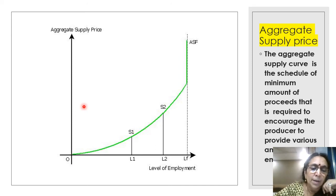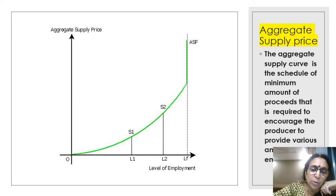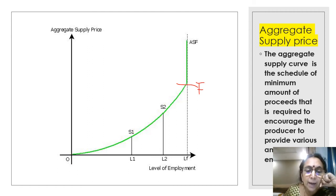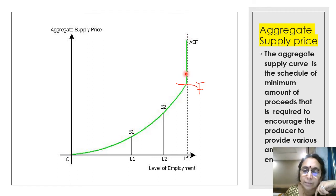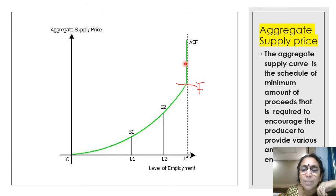Now we draw the aggregate supply curve. The aggregate supply curve increases up to point F. At point F, aggregate supply reaches full employment. Aggregate supply increases from O to F; at F the economy reaches full employment. After F, aggregate supply becomes perfectly inelastic — it becomes a vertical straight line. When aggregate supply is AS1, the level of employment is ON1. When aggregate supply increases to AS2, employment increases to ON2, and finally the economy reaches full employment at F.